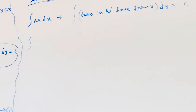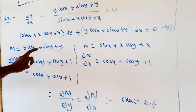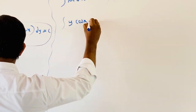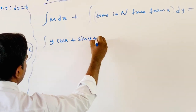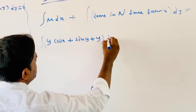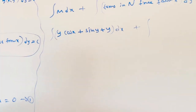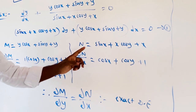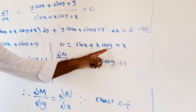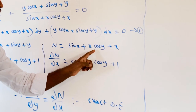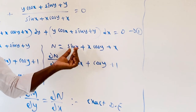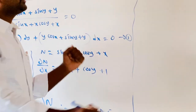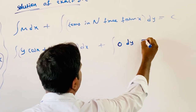Evaluating the integral of M dx: M is y cos x plus sin y plus y. Observing N — which is sin x plus x cos y plus x — every term in N contains x, so there are no terms in N free from x. Therefore the second integral is 0 dy, which contributes nothing.